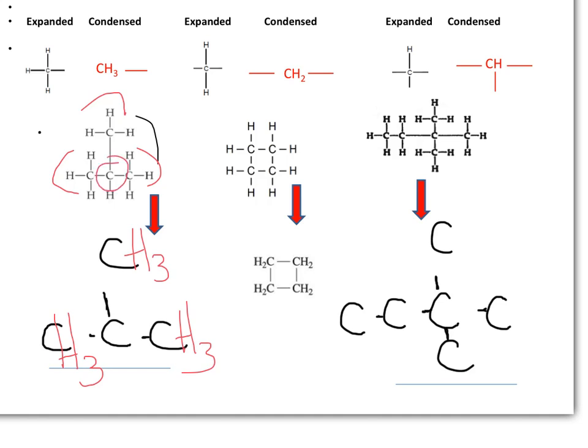This central carbon has only one hydrogen, so we place it right next to it. We do the same for this one. And now this one has two hydrogens.